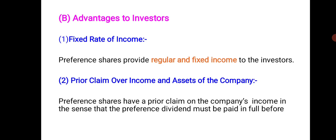Second, prior claim over the income and assets of the company. If preference shareholders are participating, they can also claim priority over residual income and residual assets. Preference shares have a prior claim on the company's income — the preference dividend must be paid in full before any dividend on equity capital. Similarly, in the event of liquidation, the whole of preference capital must be paid before any amount is paid to equity shareholders.